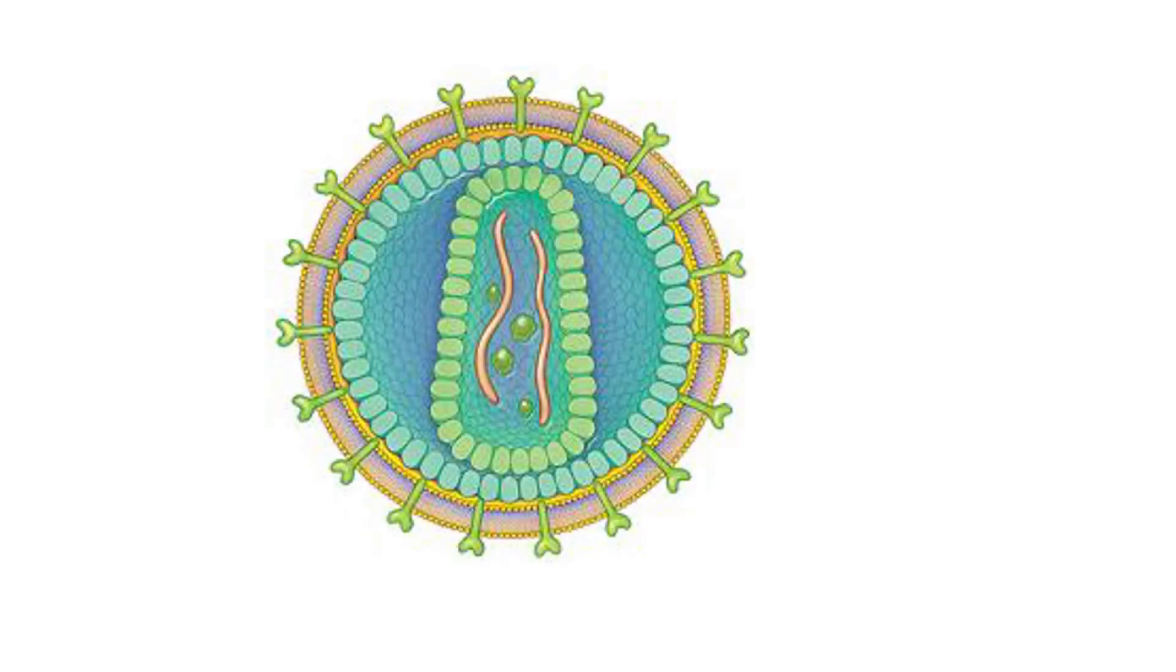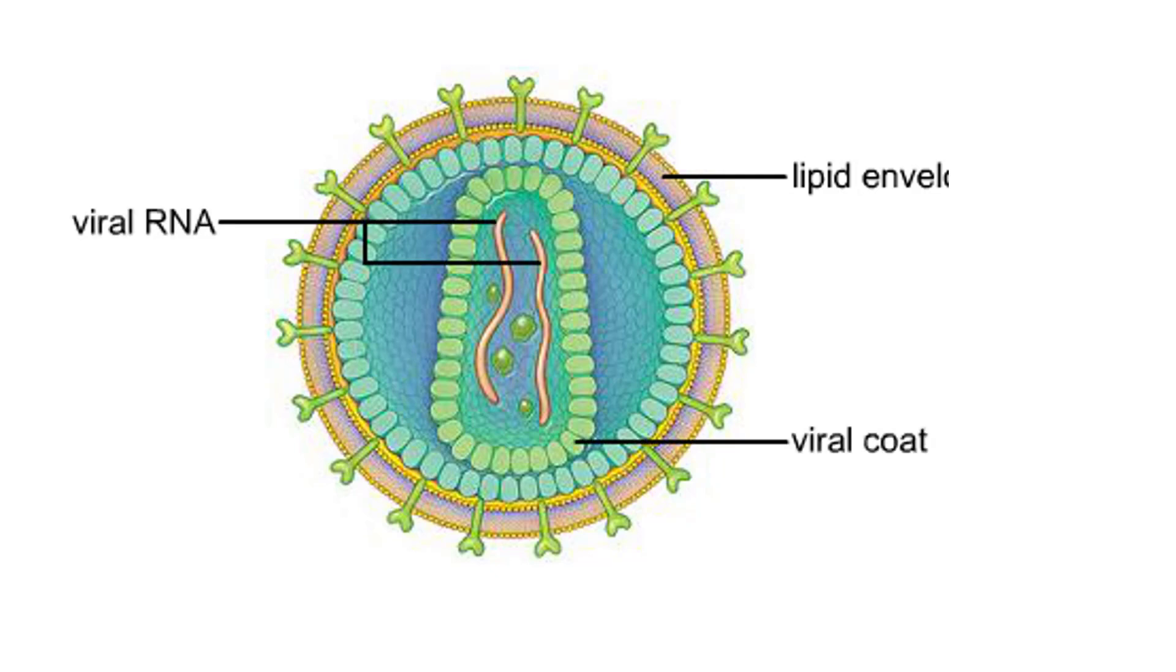The HIV virus is surrounded by a lipid envelope with embedded proteins. A coat of viral proteins surrounds two strands of RNA and the enzymes used during replication.